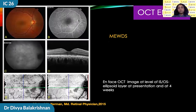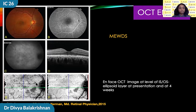An example of OCT enface imaging of a uveitis case: the fundus picture shows very subtle changes, FFA shows a few areas of hyperfluorescence, ICG shows multiple areas of hypofluorescence, and OCT structural image shows loss at the IS/OS junction. The enface image through the ellipsoid zone shows multiple areas of involvement at initial presentation, which are reduced in follow-up OCT scan.